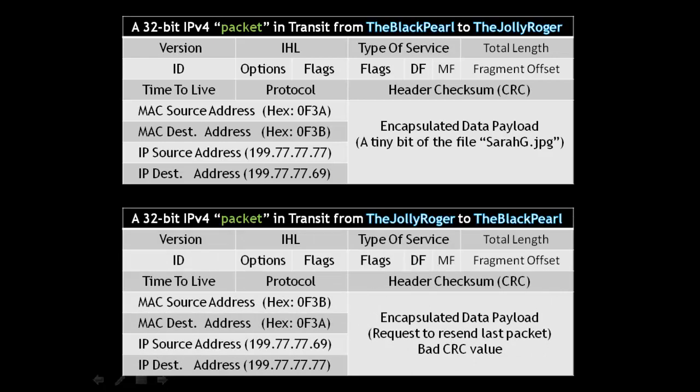This next table represents another packet — in this case, a reply packet returning from the Jolly Roger back to the Black Pearl. It is also 32-bits in IP version 4, but if you look at the source address and destination addresses, they are inverted.